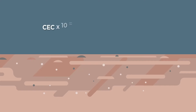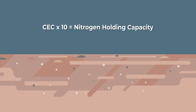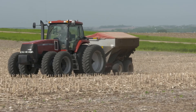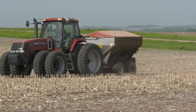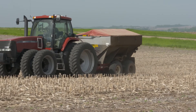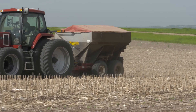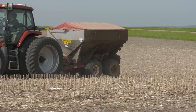If you've got a low CEC, say 10, you take that number times 10 and that's the ability of a soil to hold how many pounds of nitrogen. So if you've got a CEC of 10 times 10, that's 100 pounds of nitrogen that should be applied at any one point in time.